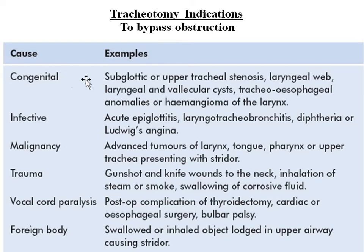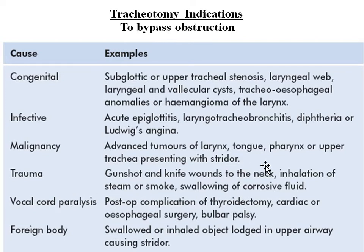In congenital cases: subglottic or upper tracheal stenosis, laryngeal web, laryngeal and vallecular cysts, craniofacial abnormalities, and hemangioma of the larynx. Infective causes: acute epiglottitis, laryngotracheobronchitis, diphtheria, and Ludwig's angina. In malignancy: advanced tumors of the larynx, tongue, pharynx, or upper trachea presenting with stridor. In trauma: gunshot or knife wounds to the neck, inhalation of steam or smoke, swallowing corrosive fluids. Vocal cord palsy as a post-op complication of thyroidectomy, cardiac, or esophageal surgery, and bulbar palsy. Foreign bodies obstructing the upper airway cause stridor.